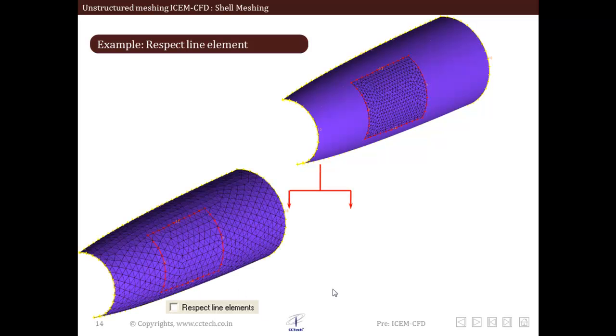Let us see in case 1. In this case when respect line element was deactivated, surface patch was remeshed using new parameters, which in many cases is undesirable. You can see here the central patch is remeshed with new parameters.